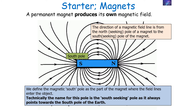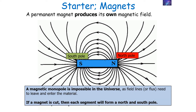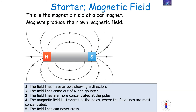The direction of a magnetic field line is from the north-seeking pole to the south-seeking pole of the magnet. All magnets are magnetic dipoles, meaning every magnet has two poles, so field lines leave and enter all magnetic objects. A magnetic monopole is impossible in the universe, as field lines need to both leave and enter the magnet. If a magnet is cut, each segment will form a north and south pole. This is a major difference from electrically charged objects, which can be either positive or negative, whereas magnetically charged objects must always have both a north and a south pole.